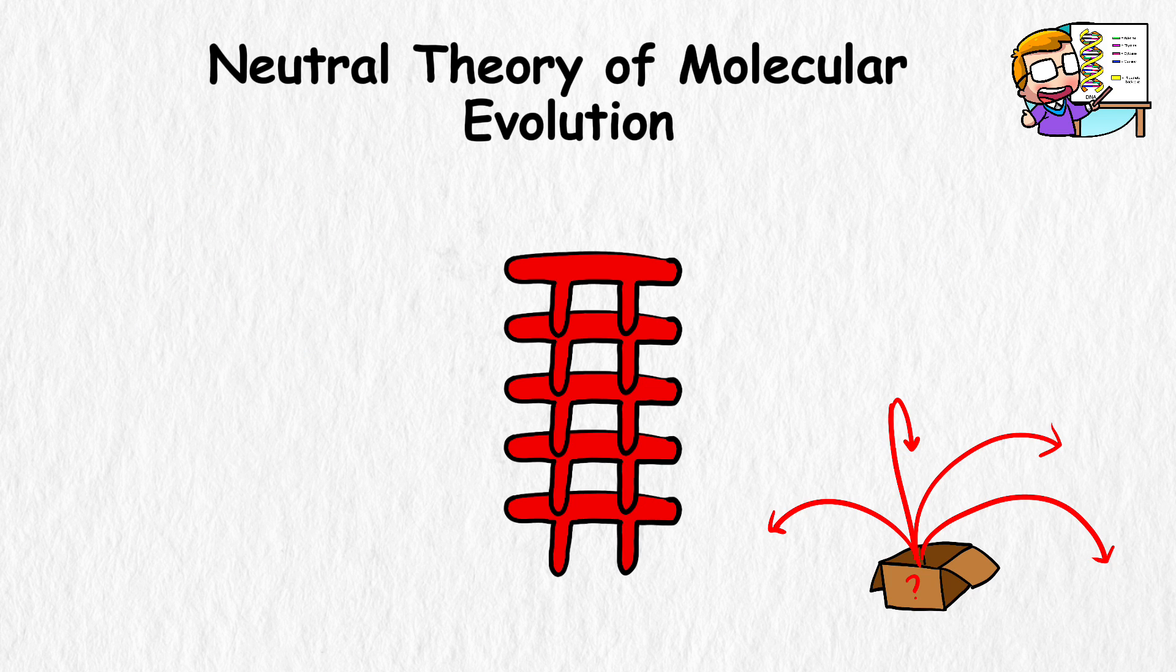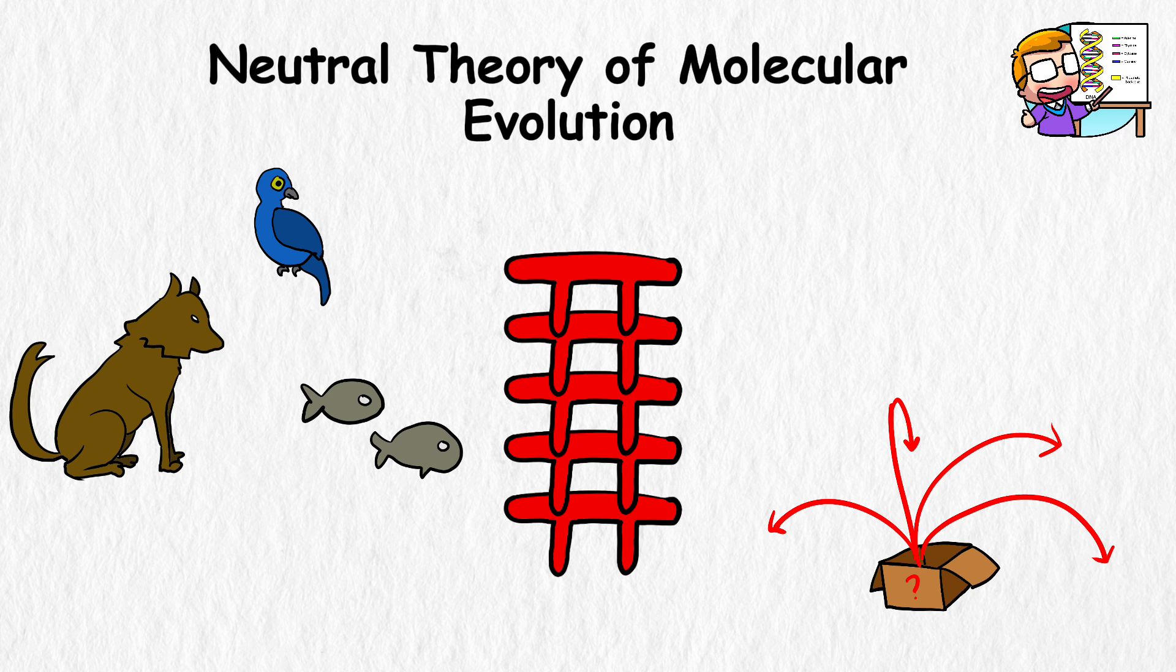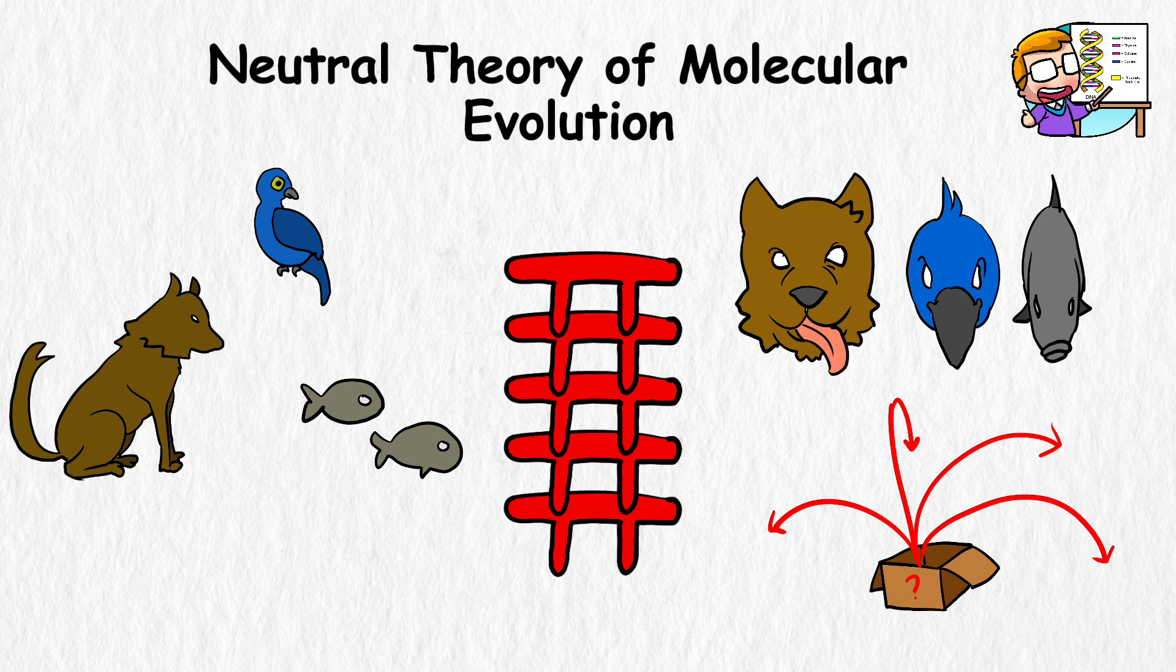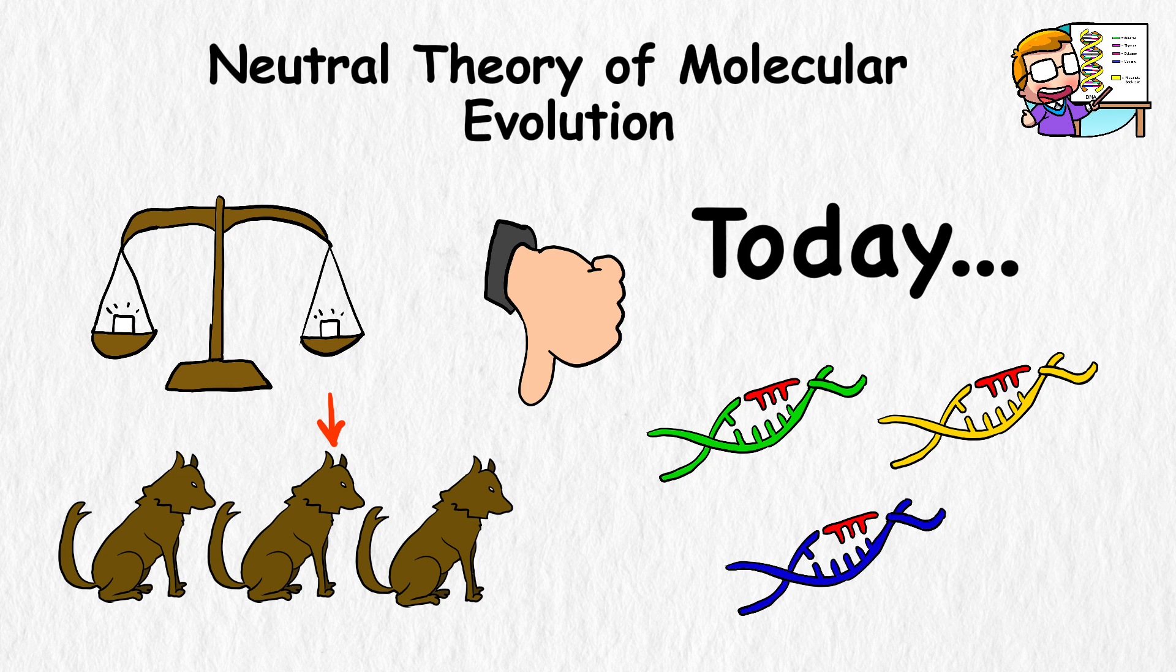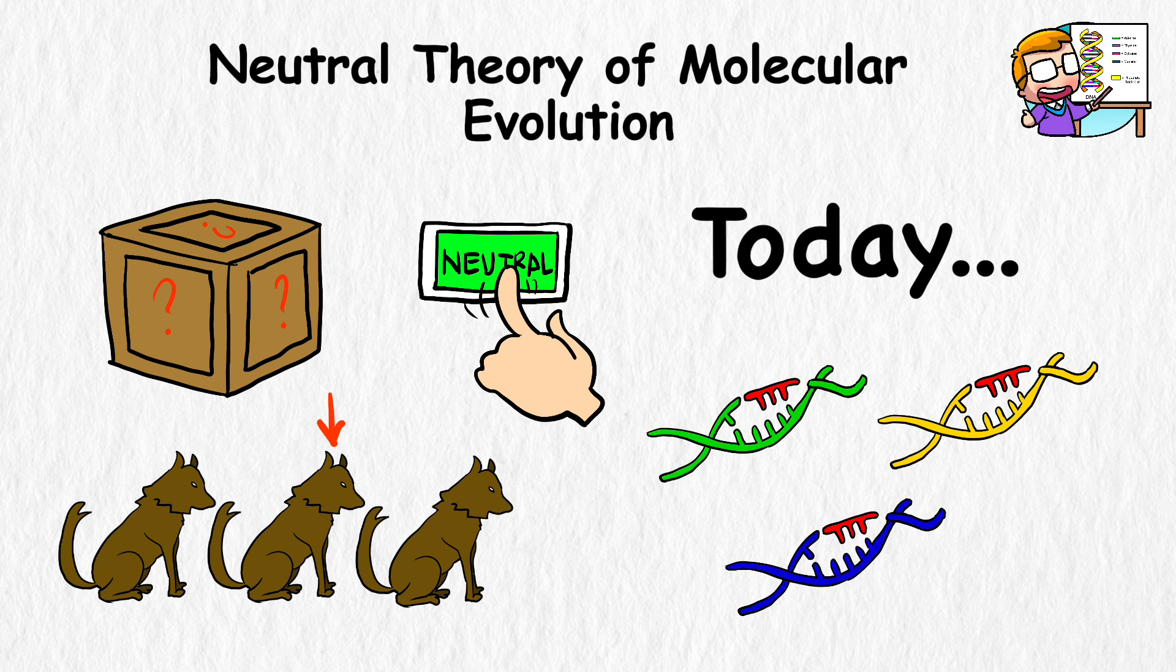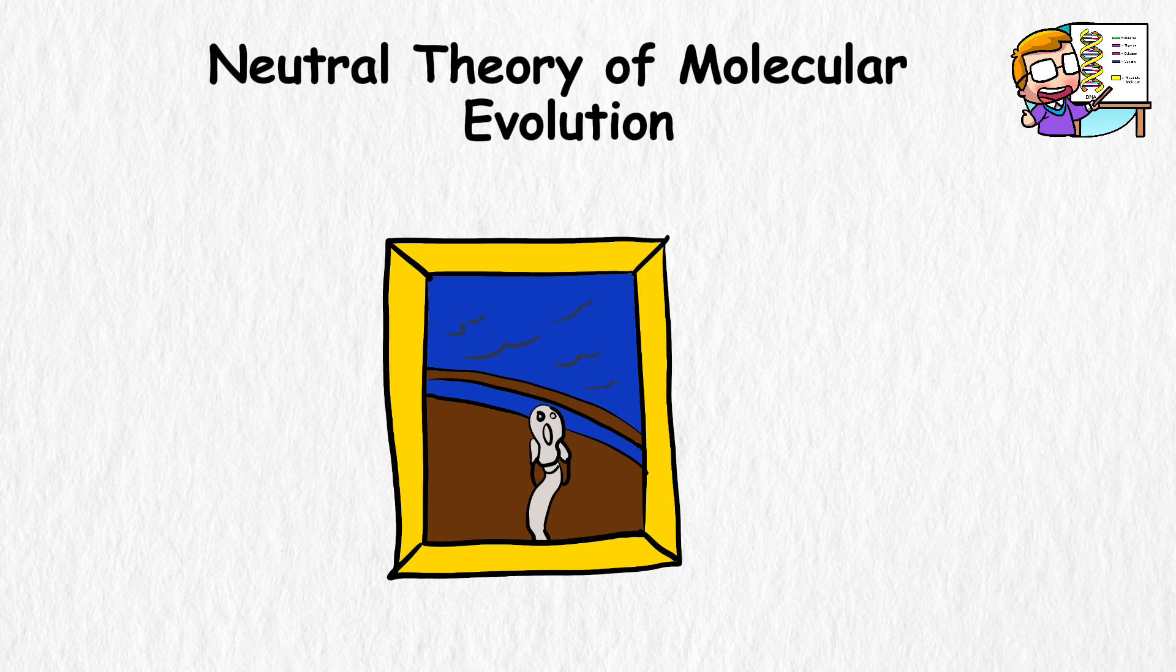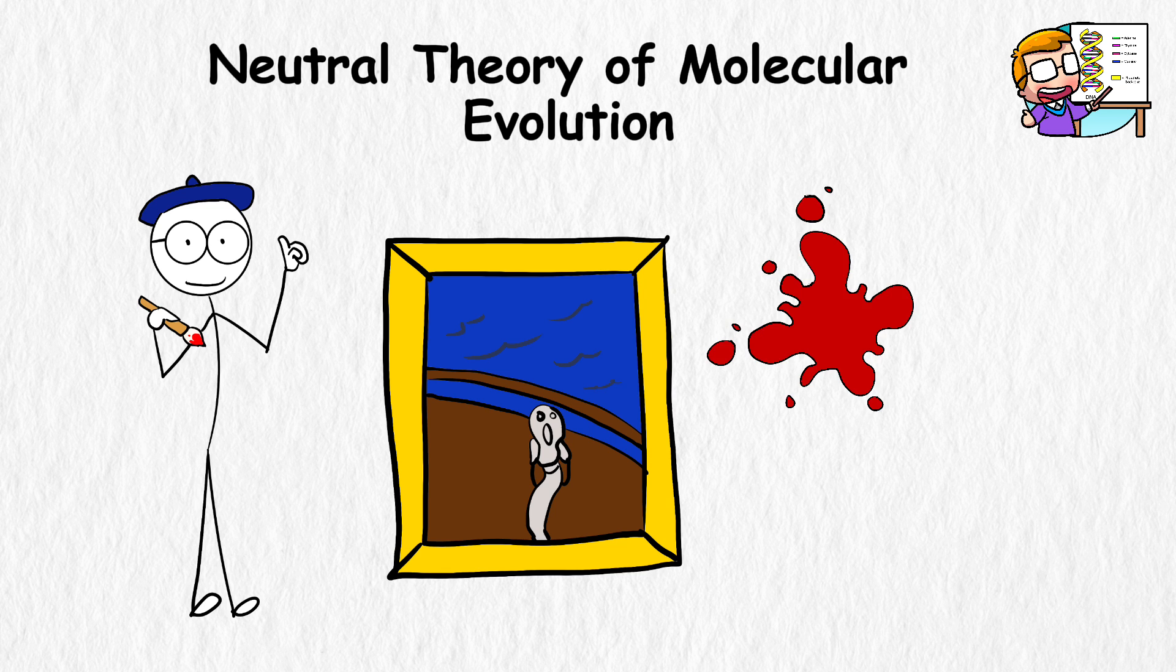Over time, these random changes build up, and that's why different species can end up looking or acting differently, even if it wasn't because they had to adapt. The neutral theory doesn't say natural selection isn't important. It argues that much of the genetic variation we see today is due to these random neutral changes. It's like saying that not every detail of a masterpiece painting was planned by a painter, but were merely accidental details painted into the canvas for the heck of it.